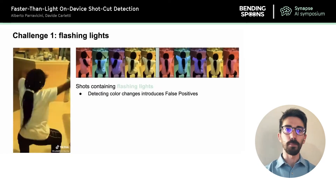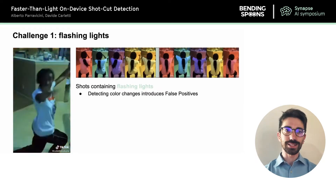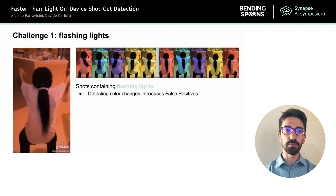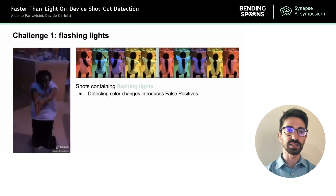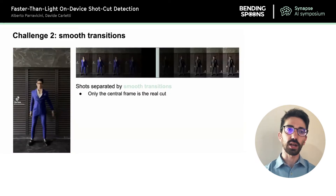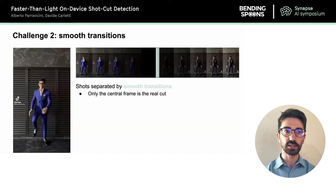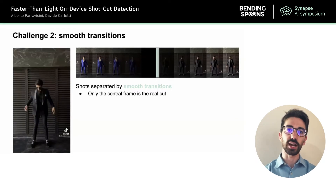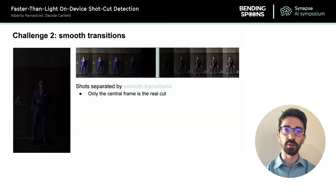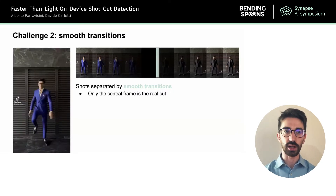First, a video might contain flashing lights, as in this example. Techniques that simply rely on color differences might get fooled and predict non-existing cuts. Then smooth cuts are also a problem because there's no sudden change between one scene and the next — we need to identify the central frame of the transition, which could be difficult if the transition happens with a very smooth gradient.